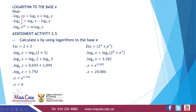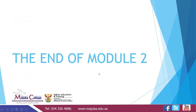Another example: x equals 2 to the power 4 plus e to the power 3. Introducing log on both sides: log base e of x equals log base e of 2 to the 4 plus e to the 3. Punching into the calculator gives 3.182. So x equals e to the power 3.182, giving x equals 24.086. That's the end of Module 2. Keep practising — practice makes perfect. Until next time, thank you, bye.